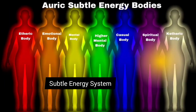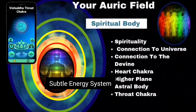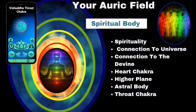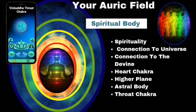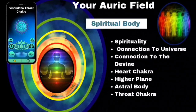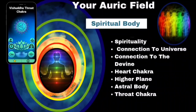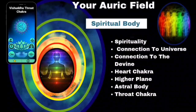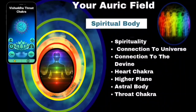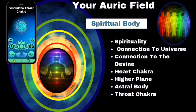There are seven qualities or seven energy bodies corresponding to each chakra within the auric field. Number five: the spiritual body. This is associated with the universe, the divine, and it is connected through the throat chakra, the vishadara. This is your connection to your spirituality, connection to the universe, connection to the divine, connection to the higher planes of existence — sometimes referred to as the astral body. This is connected through the throat chakra of self-expression and communication.